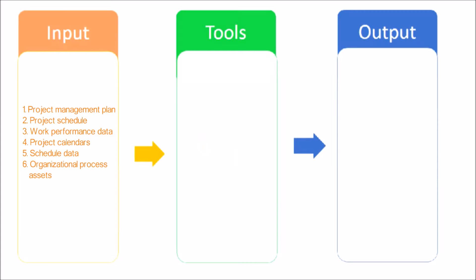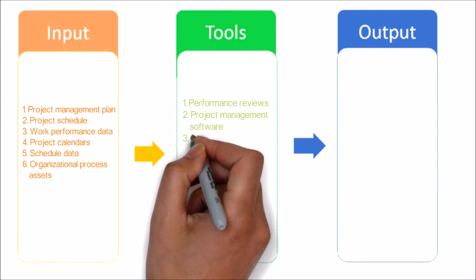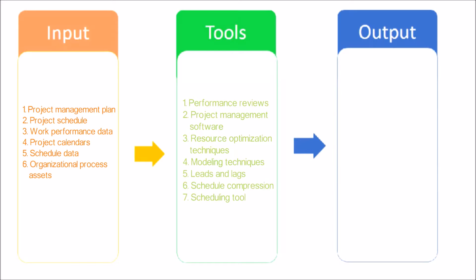Organizational Process Assets. Next, let's have a look at tools and techniques used in this process. Performance Reviews: Performance Reviews measure, compare, and analyze schedule performance such as actual start and finish dates, percent complete, and remaining duration for work in progress. Project Management Software: Project Management software for scheduling provides the ability to track planned dates versus actual dates, to report variances and progress made against the schedule baseline, and to forecast the effects of changes to the project schedule model.